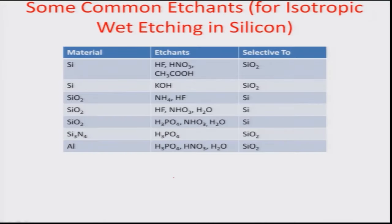Let us look at some of the different etchants used and what each is selective to. Considering materials like silicon, silicon dioxide, silicon nitride, and aluminum — there are combinations of etchants which work well. For silicon, a combination of hydrofluoric acid, HNO3, and CH3COOH is a good etchant, and as soon as it faces the SiO2 layer the etch stops or slows down. Similarly, KOH etches silicon with SiO2 as the stop layer.